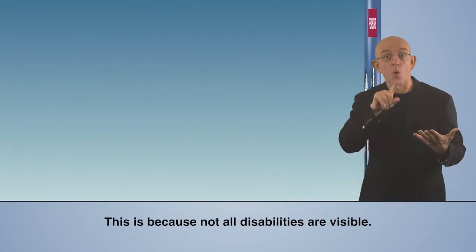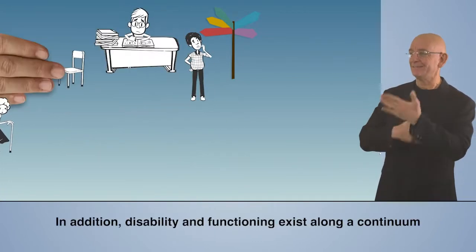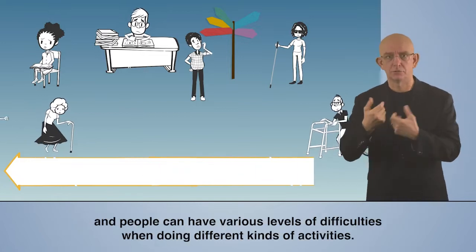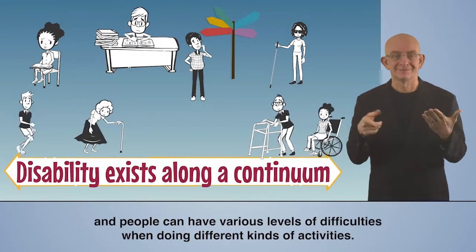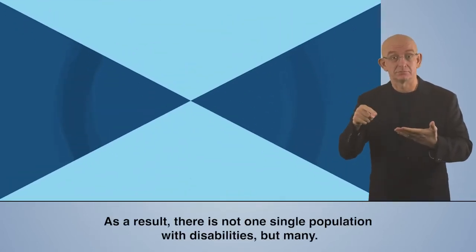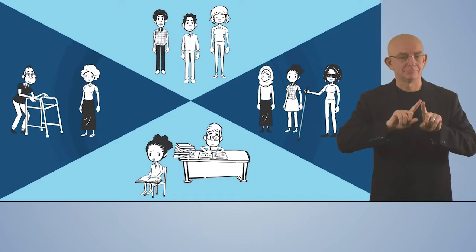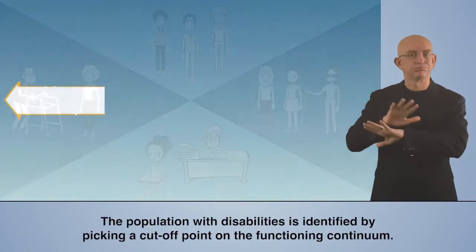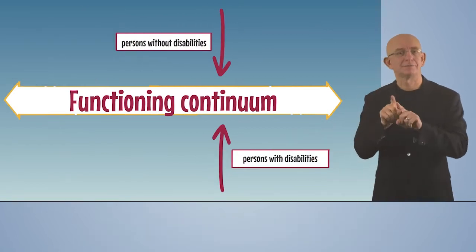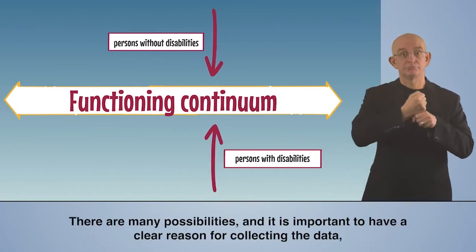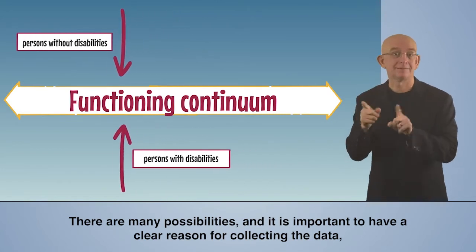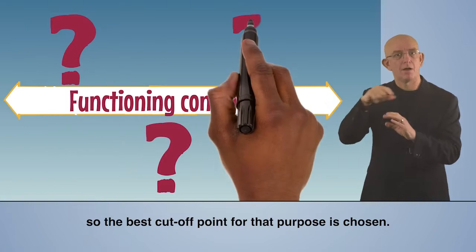This is because not all disabilities are visible. In addition, disability and functioning exist along a continuum, and people can have various levels of difficulties when doing different kinds of activities. As a result, there is not one single population with disabilities, but many. The population with disabilities is identified by picking a cut-off point on the functioning continuum. There are many possibilities, and it is important to have a clear reason for collecting the data so the best cut-off point for that purpose is chosen.